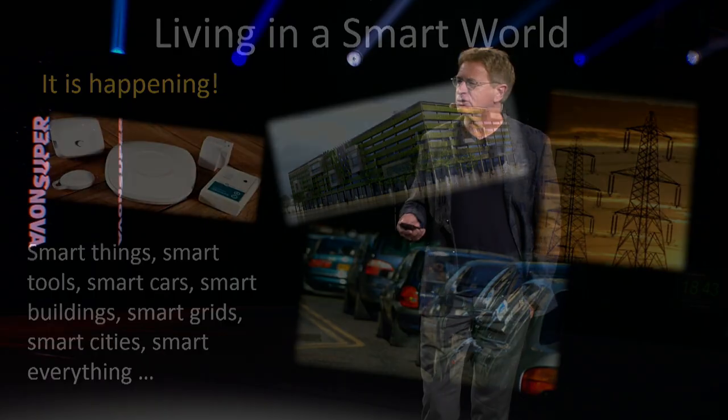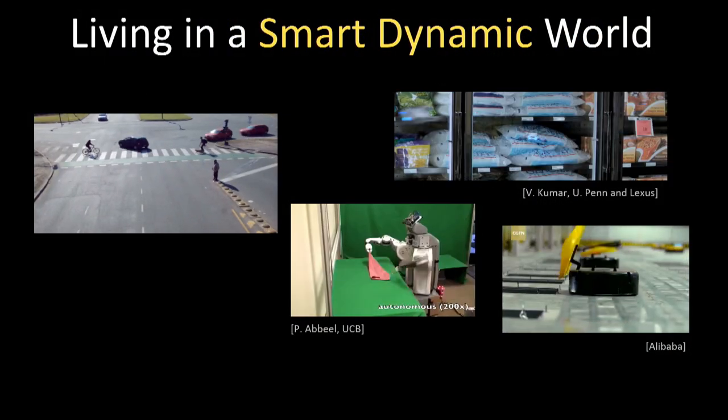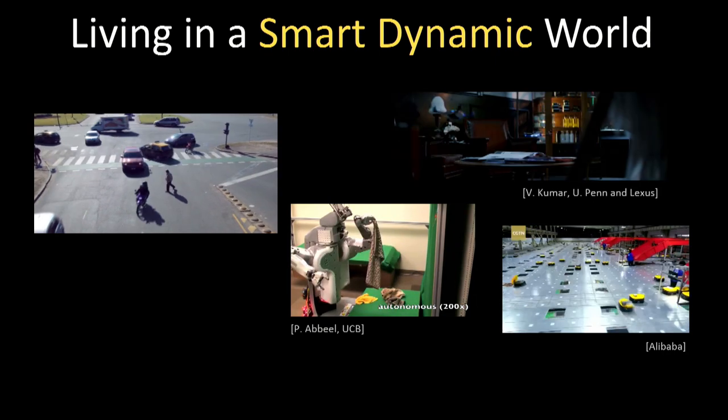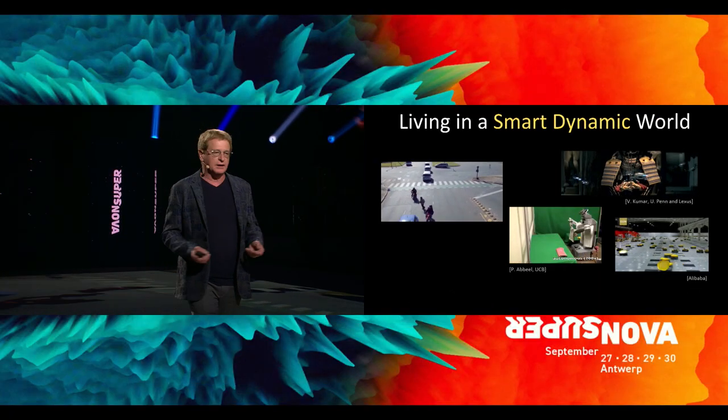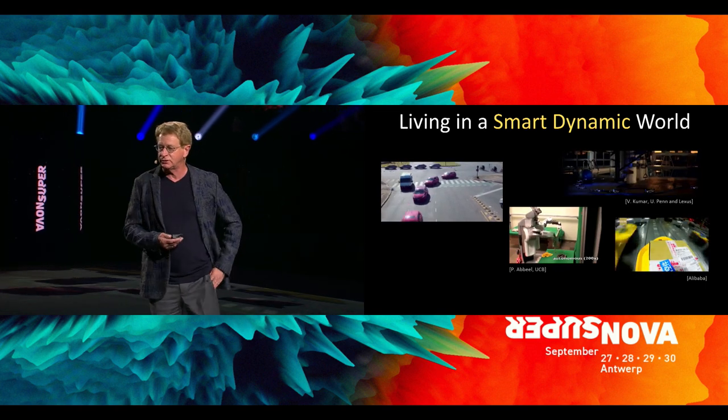Actually, in the next couple of years, this smart world will become a lot more dynamic. Things will be moving around us. We have groups of drones. We have robots doing certain tasks. We have groups of robots working together. And we have smart traffic. Cars basically interacting with each other without traffic lights and so on and so forth. Amazing things, but very scary.